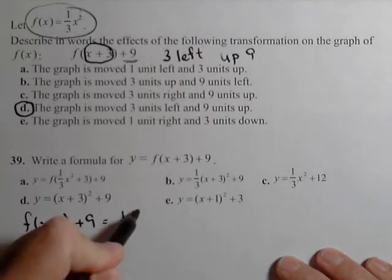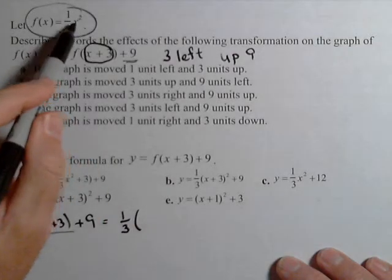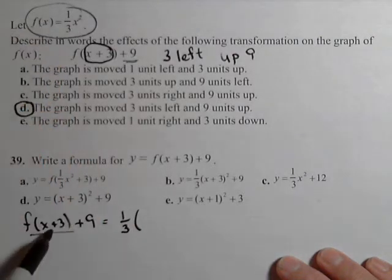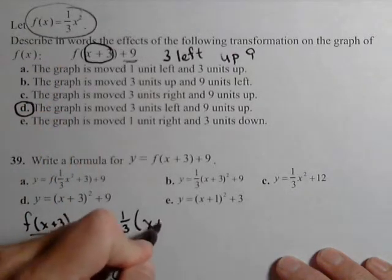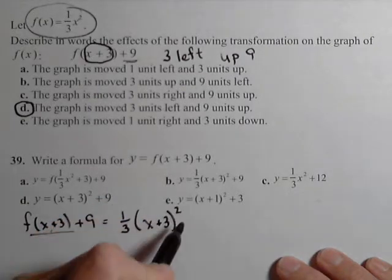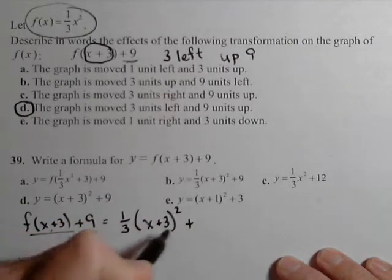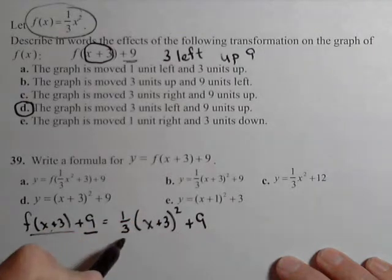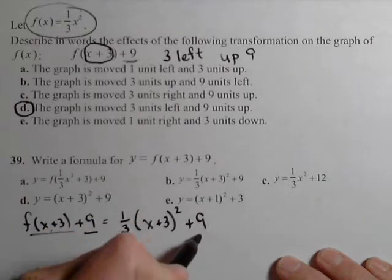It's gonna be one-third times, now we're replacing the x with x plus three, x plus three, squared. And now we have the plus nine at the end. So this part here is f of x plus three, this is plus nine.